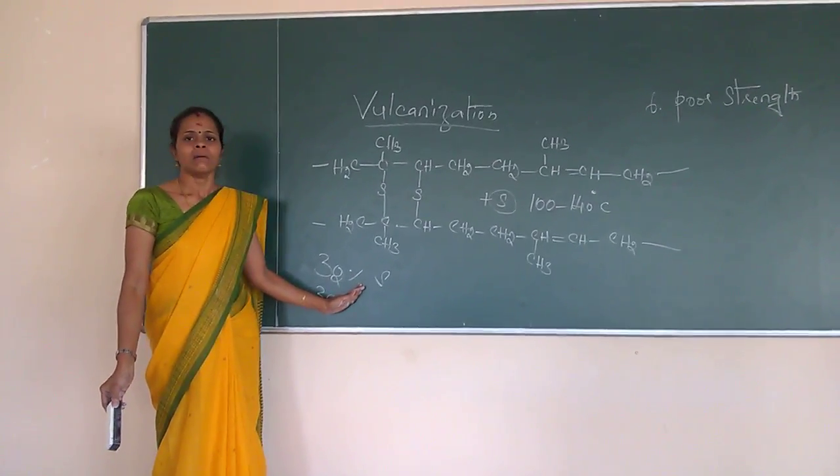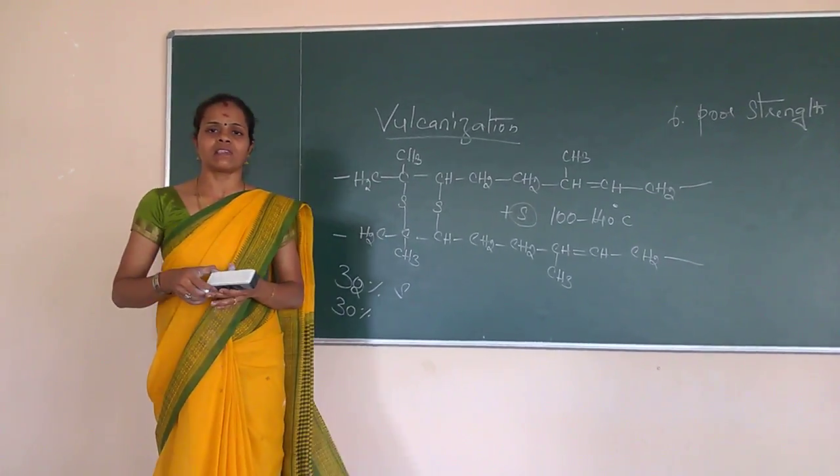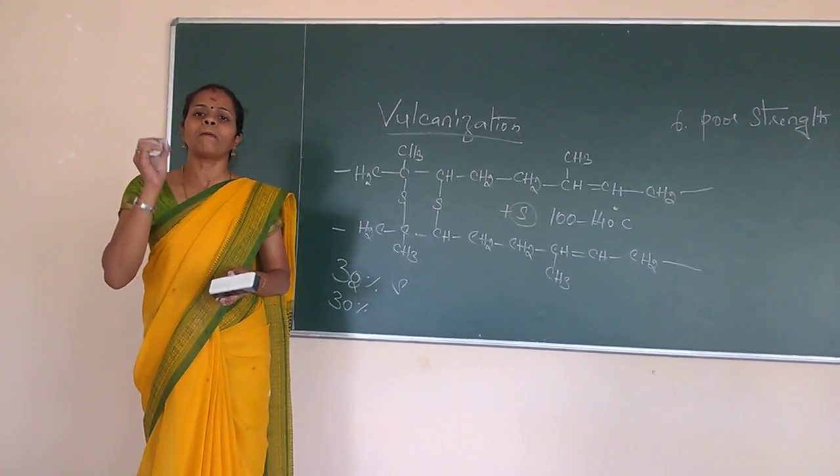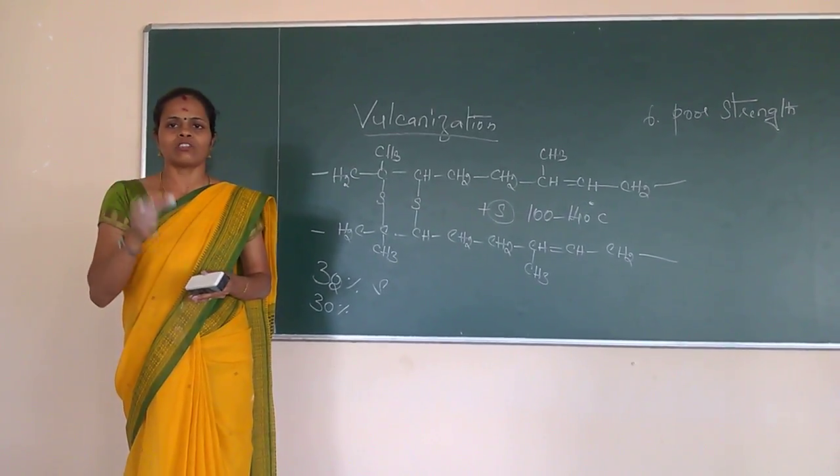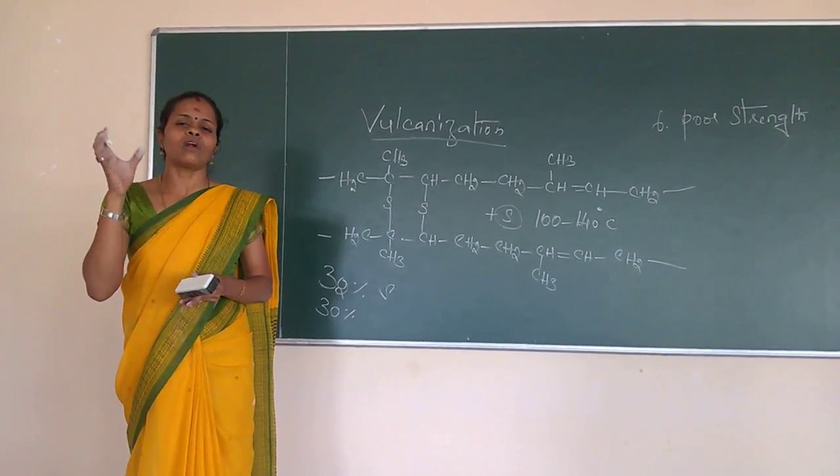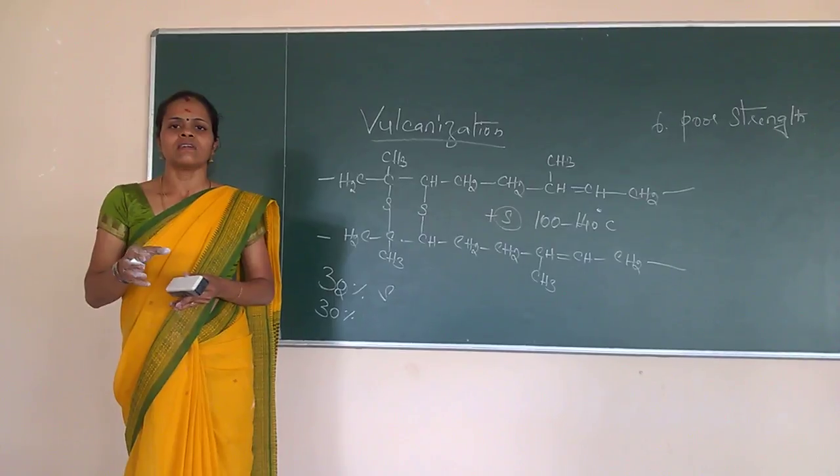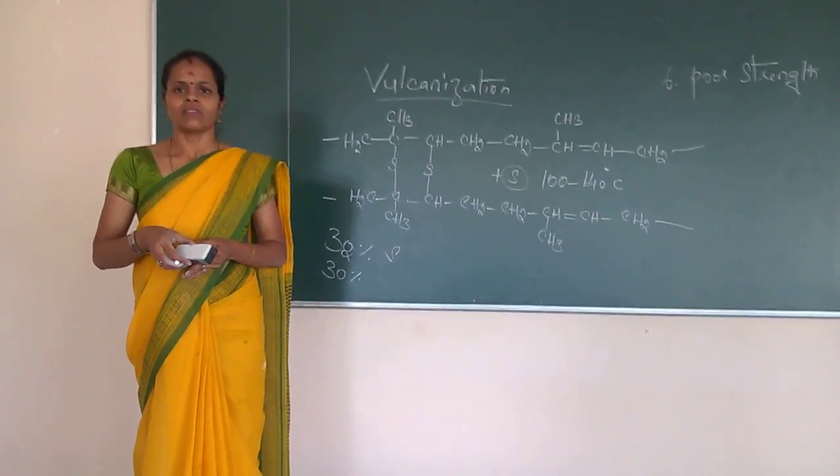So what is the purpose of vulcanization? To improve the properties that is especially strength of all the natural rubber or man-made rubber that we are adding sulfur at 100 to 140 degree centigrade means it is called as vulcanization. That's all. Thank you.